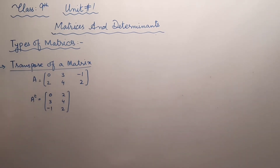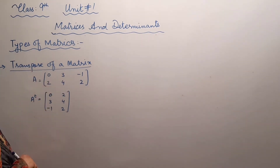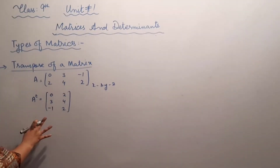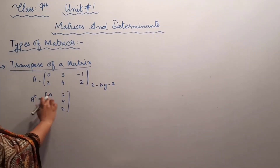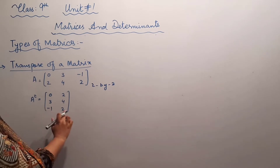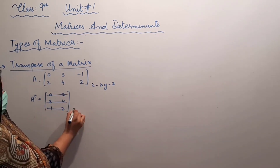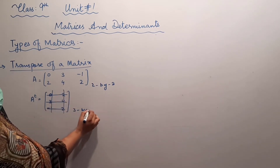Look at the order of A — how many rows are there? 2, and how many columns are there? 3. Its order is 2 by 3. But now look at the order of A transpose — it is now having 3 rows: 1, 2, 3.